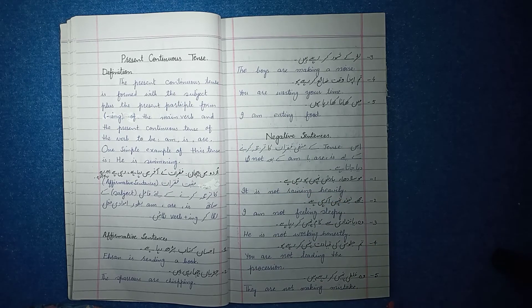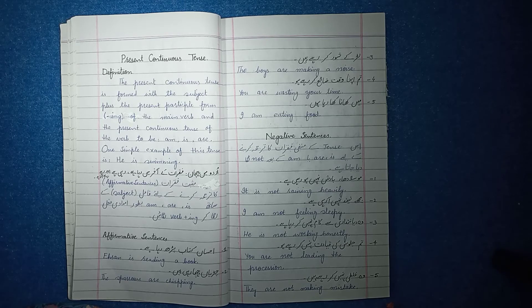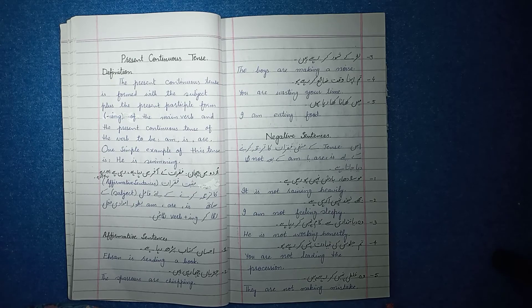Negative sentences. To make a sentence negative, add 'not' after the helping verb: is not, am not, are not. Examples: 'It is not raining heavily.' 'I am not feeling sleepy.' 'He is not working honestly.' 'You are not making a mistake.' 'You are not leading the procession.' 'They are not making mistakes.'